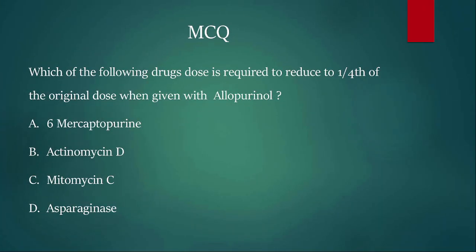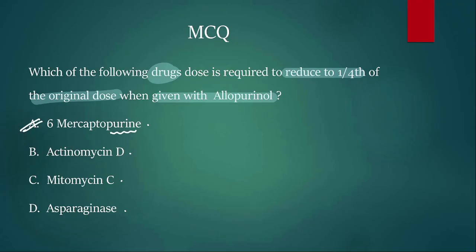MCQ 3: Which drug's dose needs to be reduced to one fourth of the original dose when given with allopurinol? Options are: A) 6-Mercaptopurine, B) Actinomycin D, C) Mitomycin C, D) L-Asparaginase. The answer is A — 6-Mercaptopurine, which is a purine analog and purine antagonist used as an anti-cancer drug.